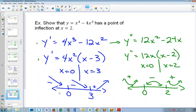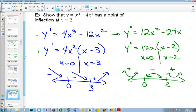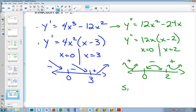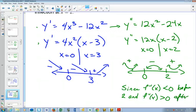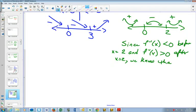So as far as the statement to show that it has an inflection point here, you could say since f double prime of x is less than 0 before 2 and f double prime of x is greater than 0 after x equals 2, we know that at x equals 2... And if we want to find out what the actual point is,